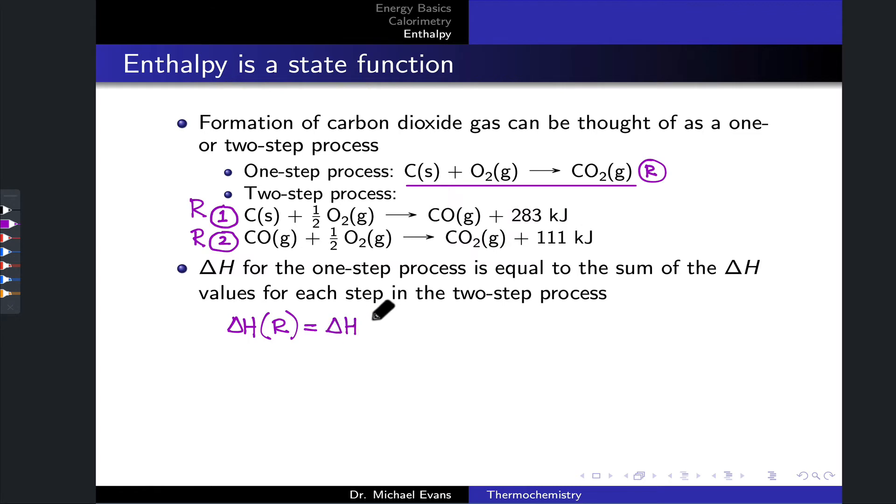Delta H for R1 and delta H for R2, which in this case is a very simple addition problem, and happens to be negative 394 kilojoules overall, where we're keeping in mind that these reactions are exothermic. We know that because the heat appears on the product side. Heat is evolved or released by these reactions. And so, in adding those together, we'll end up with an exothermic process as well.